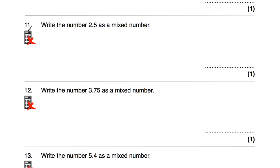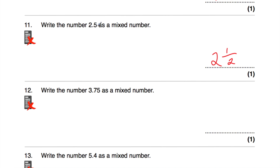Question number 11: write the number 2.5 as a mixed number. We want to write that whole number and then a fraction. Because it's 2.5, it's going to begin with a 2. And then we've got 0.5 — remember 0.5 is a half. So it's going to be 2 and a half. So 2.5 as a mixed number is 2 and a half.